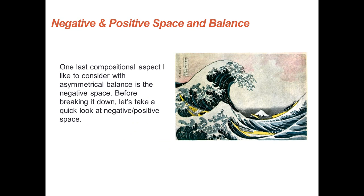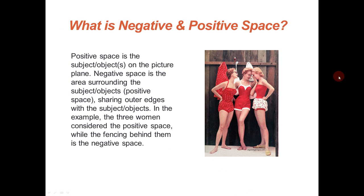There's one last element of design I like to consider when looking at asymmetrical balance, and that is negative and positive space. The positive space is the subject or object on the picture plane. The negative space is the area surrounding that subject or object — they usually share an outer edge. In this particular case, these people are the positive space, whereas the fencing in the back would be the negative space. There are different ways to use negative and positive space, but that's for a different discussion.